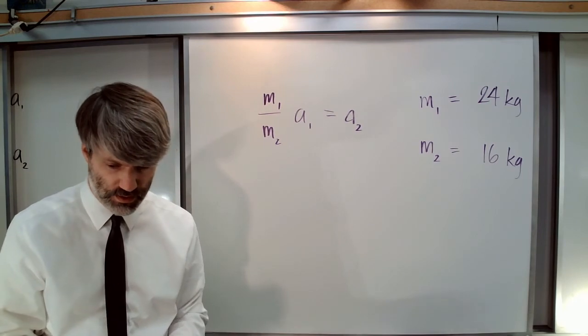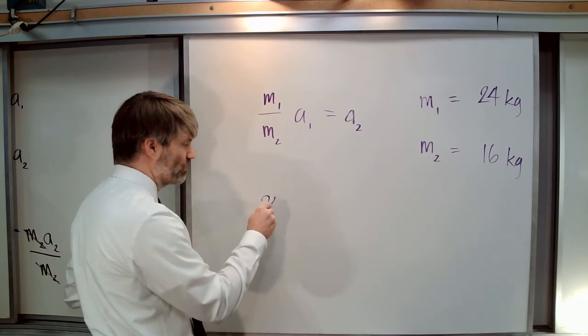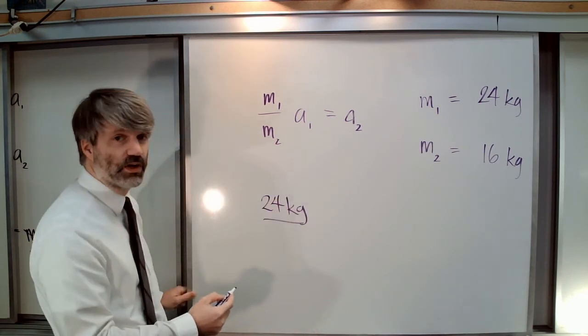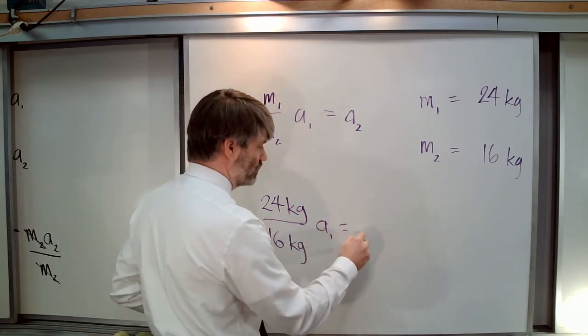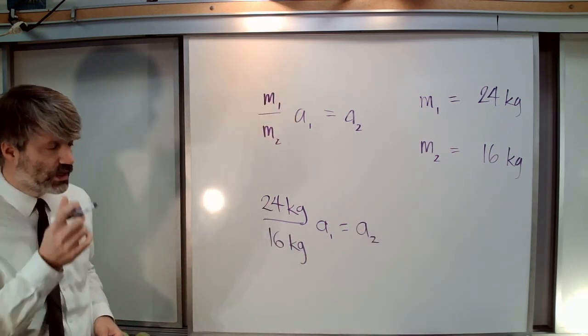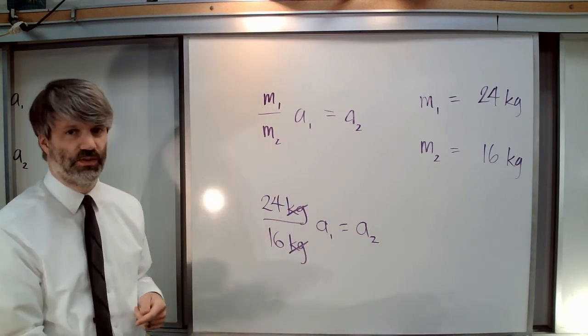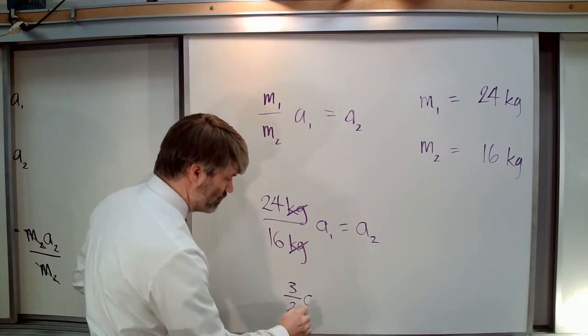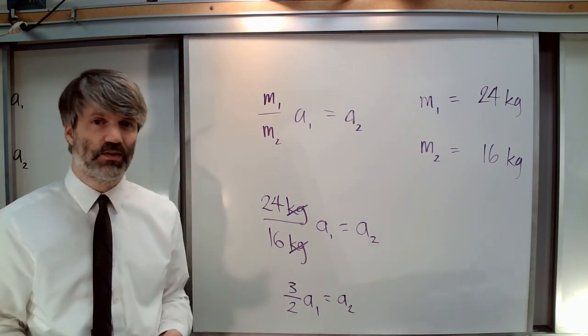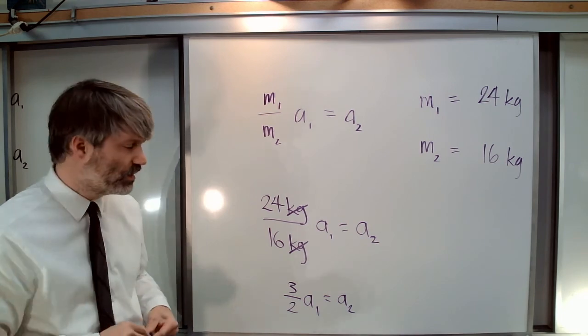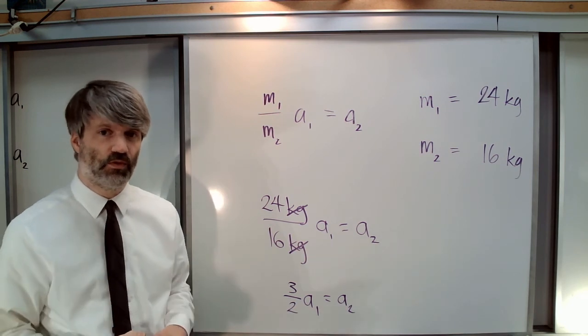If we put these numbers into the same equation, we get 24 kilograms divided by 16 kilograms times A1 equals A2. The units cancel. 24 divided by 16, they're both divisible by eight, and we get the same exact ratio of 3/2. We can see that the ratio of the masses matters more than the masses themselves. You get the same result with the same ratio of masses if they have the same force.